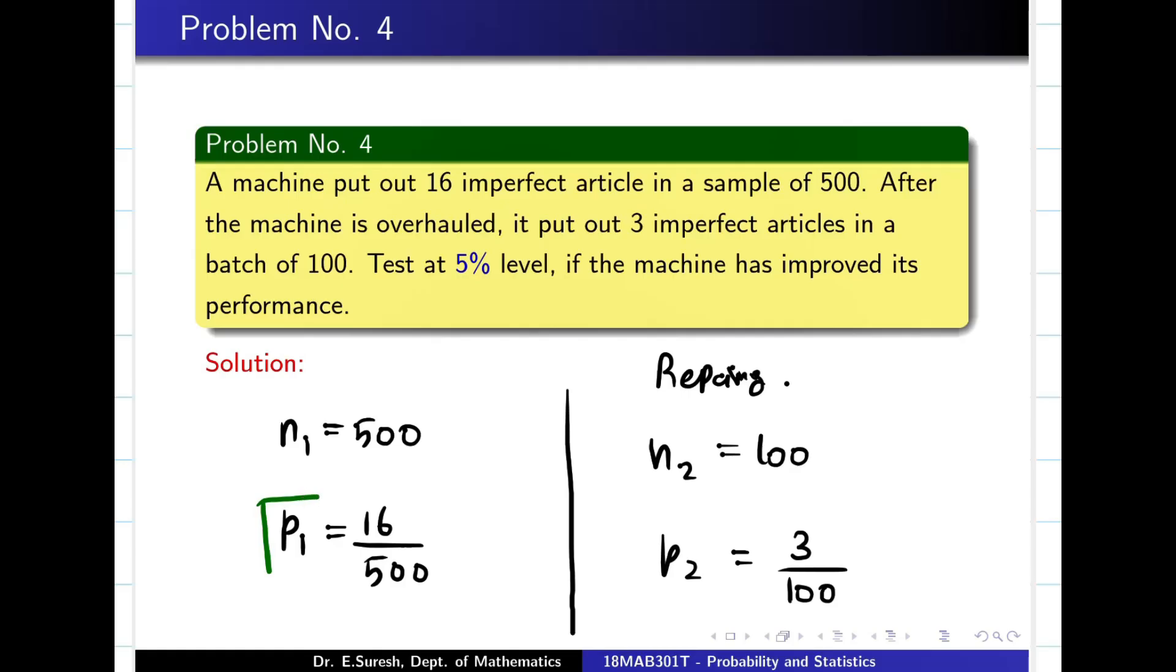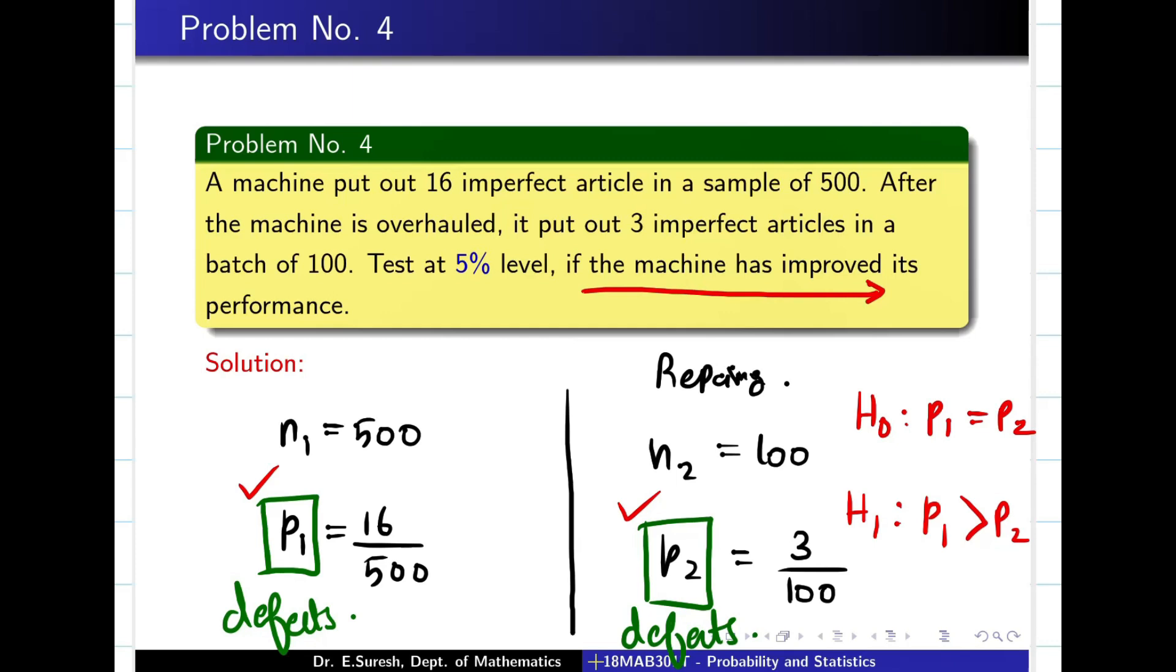Now you see, my P1 and P2 are speaking of what? Defects. They are not speaking about improvements. So when you say defect, obviously you say H0 is P1 equal to P2. P1 defect should be more than P2 because you have overhauled. Test at 5% level, the machine has improved its performance. So performance is improving. But P1 and P2, they are not giving the performance. They are giving you the defect. That is a very clever question.